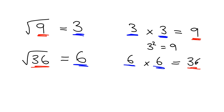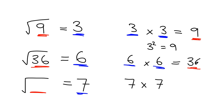Let me give you something to try for yourself. I want to know what square root will give you 7 as an answer. Try this in your homework books — pause the video now and get me the answer. You know that 7 multiplied by 7 will give you 49 as an answer, and so therefore the square root of 49 is 7.